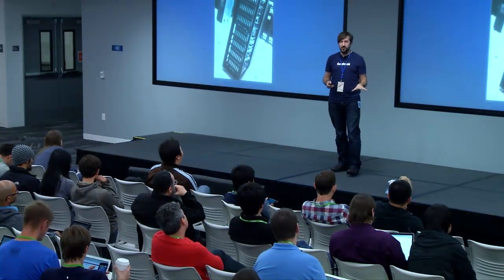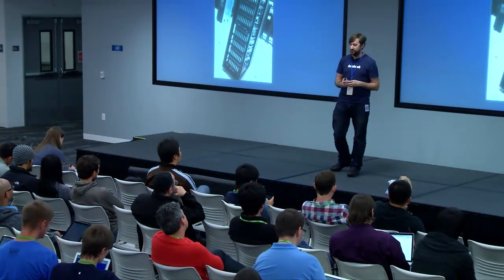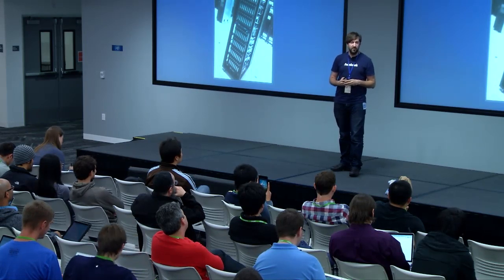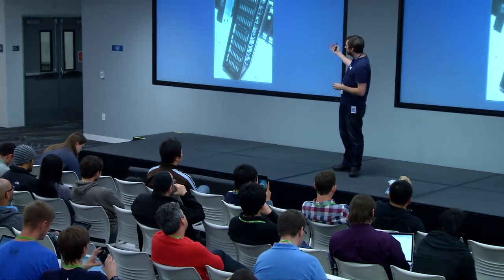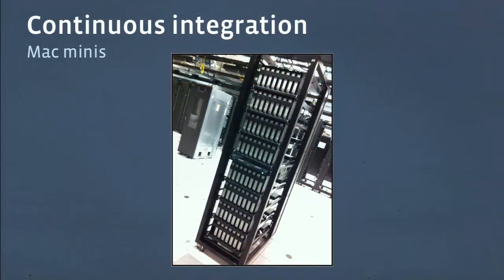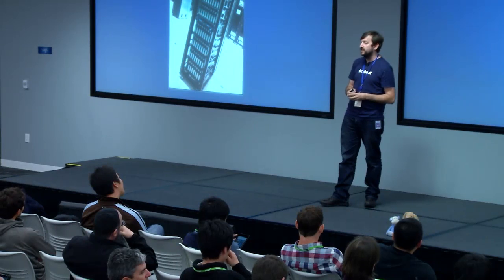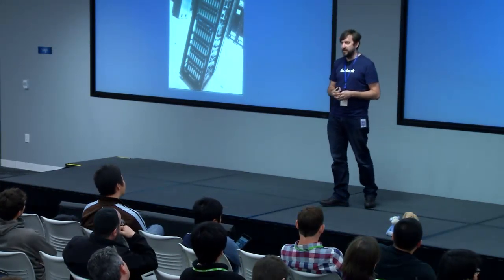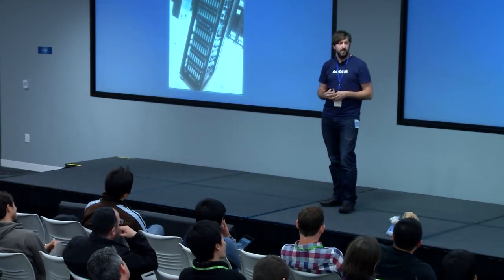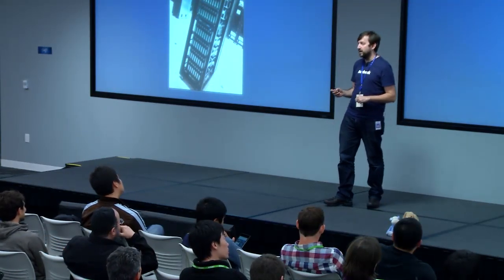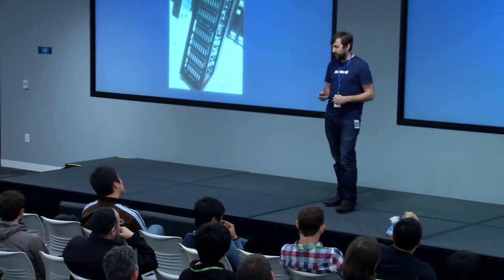We do our continuous builds. For Android, it's really easy — there's Linux, we've got data centers filled with machines. For iOS, it's a bit trickier. We have at least one rack full of Mac minis, and we use these. I think we're making these plans available through the Open Compute project. So if you can't figure out how to put a lot of Mac minis into a rack, we'll make those plans available to you. A majority of those machines are used for our continuous builds.